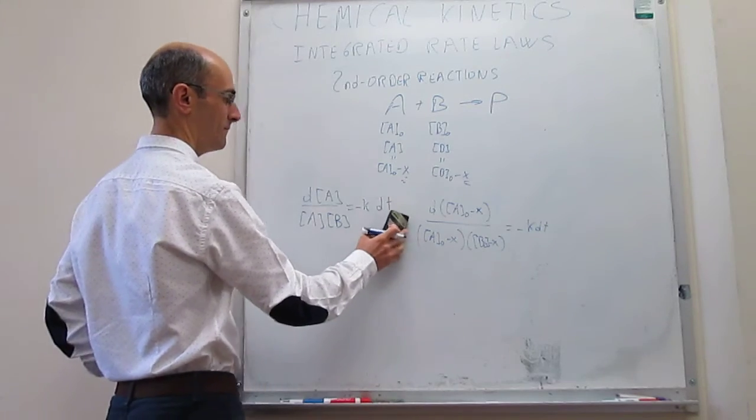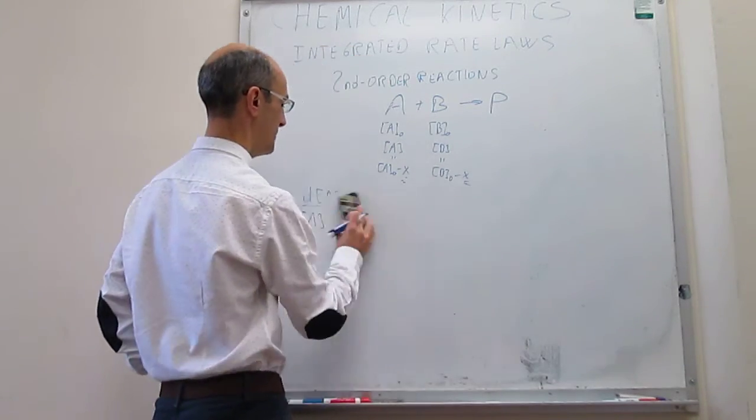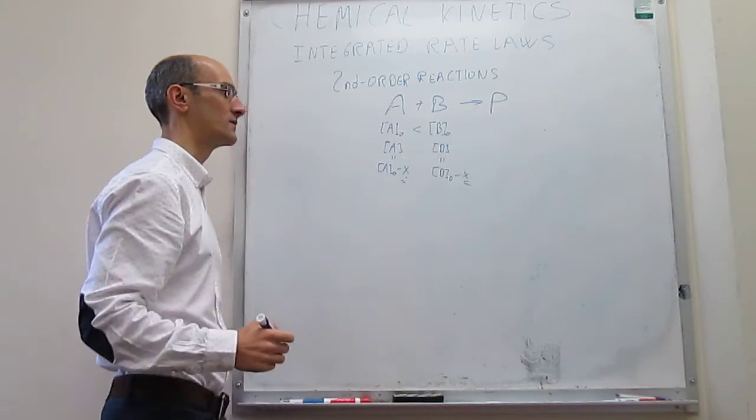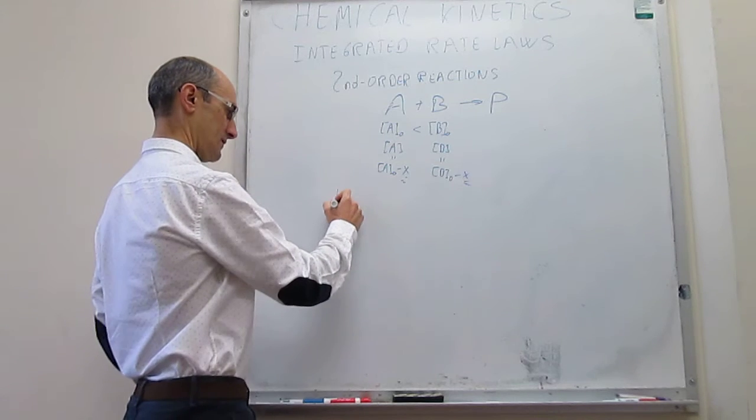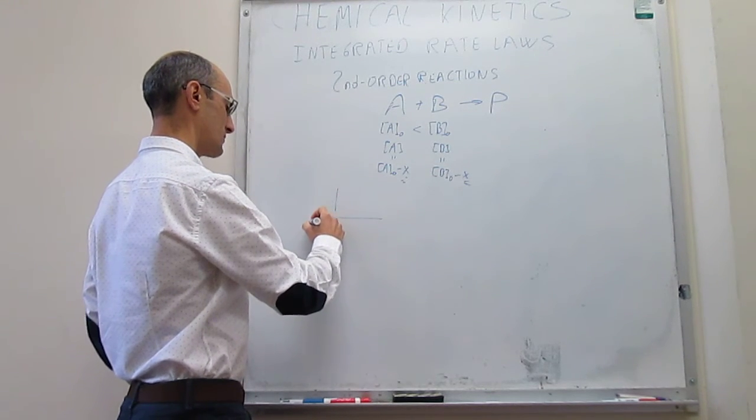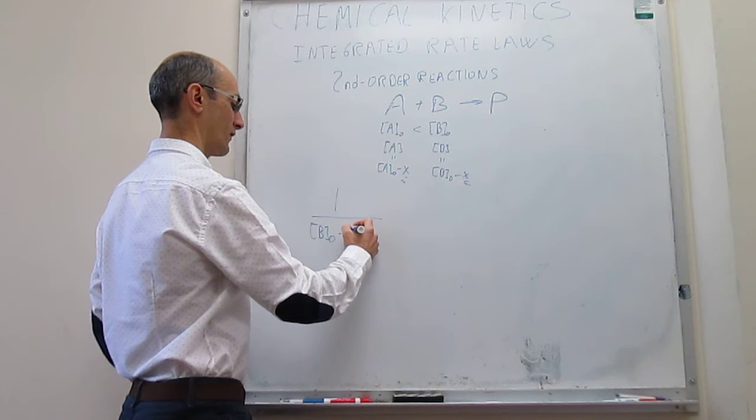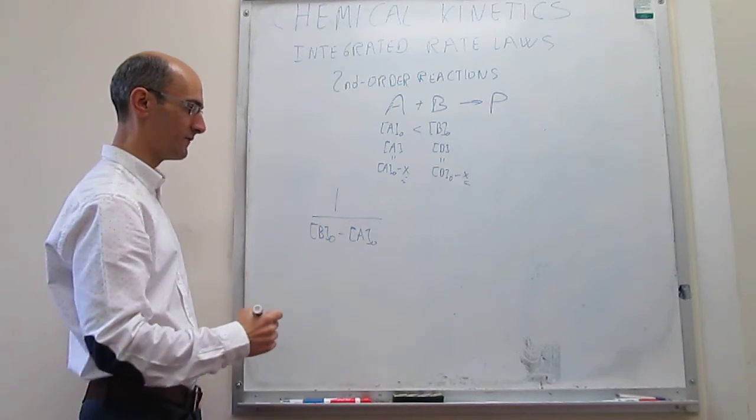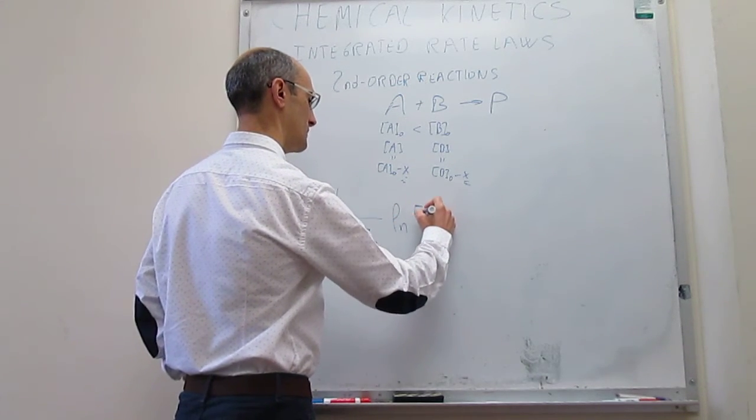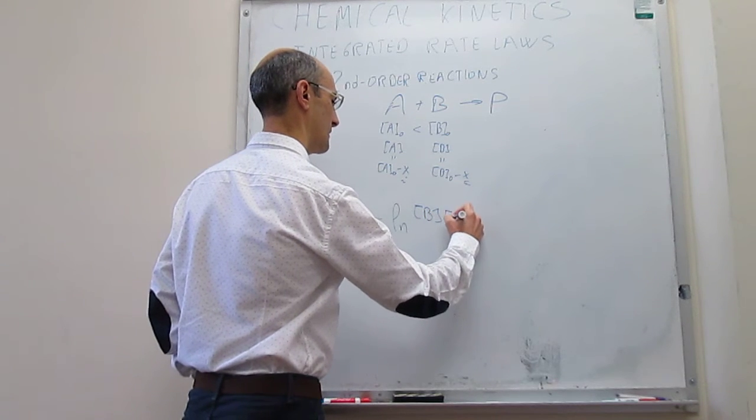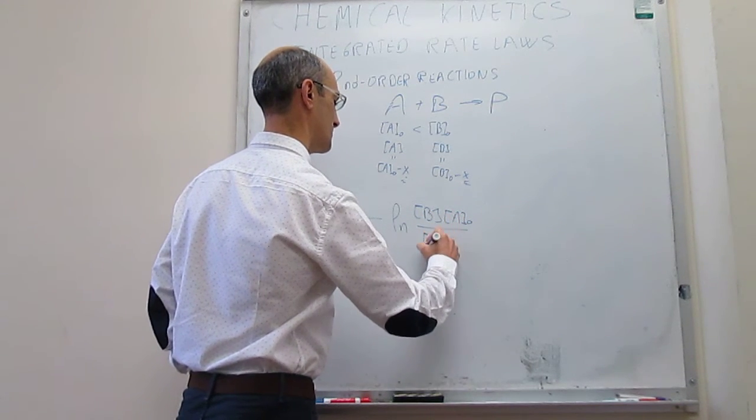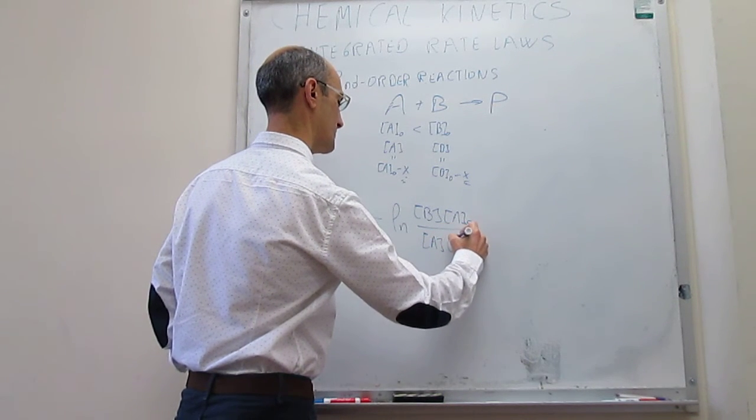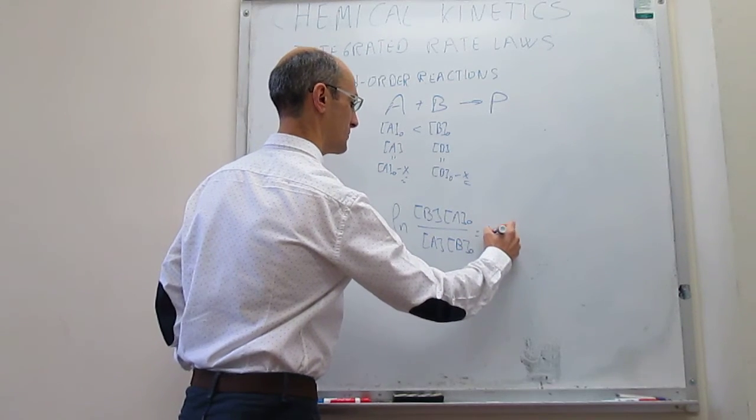So the solution of that differential expression turns into the following. And we're doing this assuming that the concentration of B-naught is a little larger than the concentration of A-naught. The answer to this, the integrated rate law is going to be equal to 1 over the concentration of B-naught minus the concentration of A-naught, times the natural log of the concentration of B times the concentration of A-naught over the concentration of A over the concentration of B-naught, and this is equal to K times T.